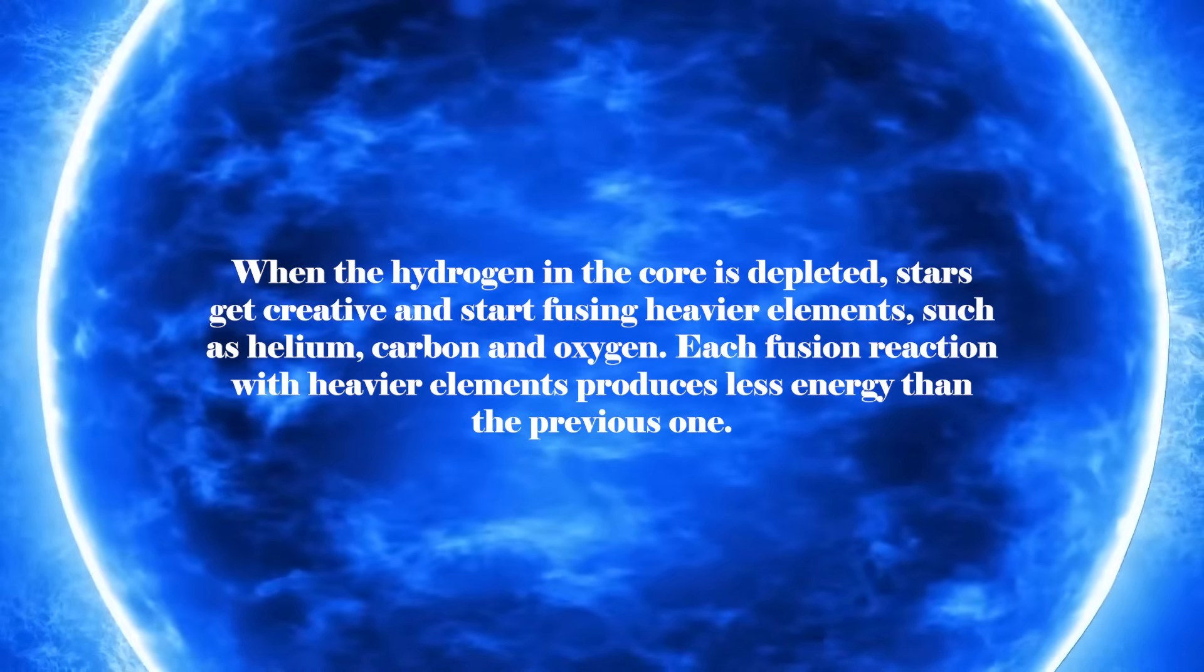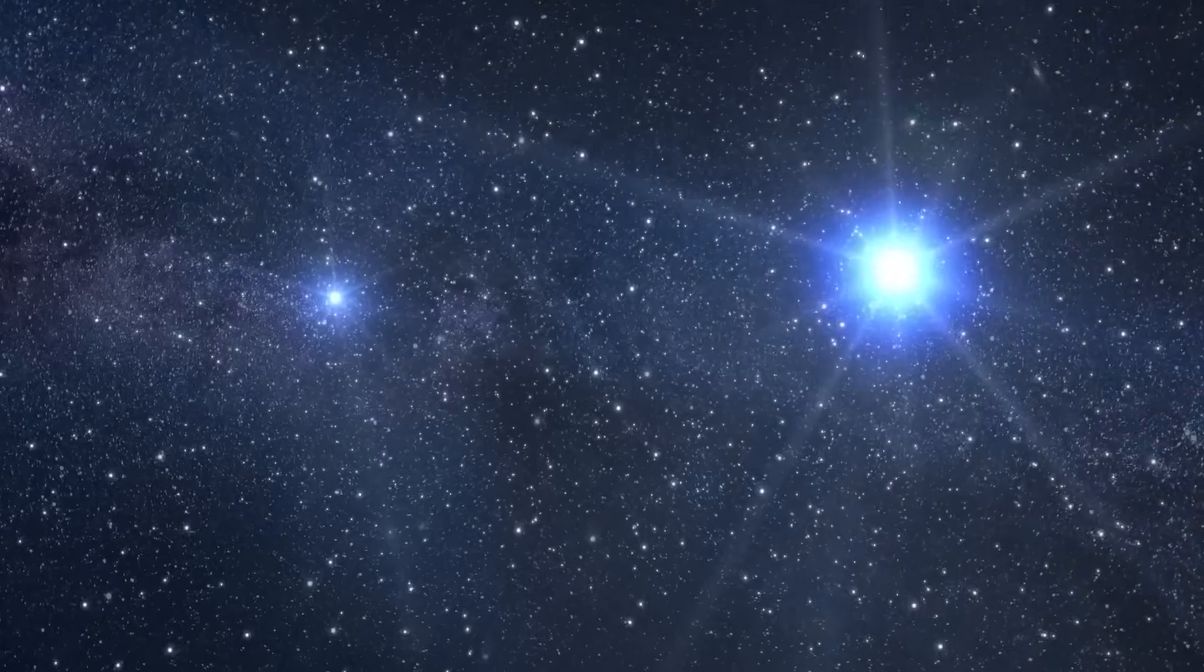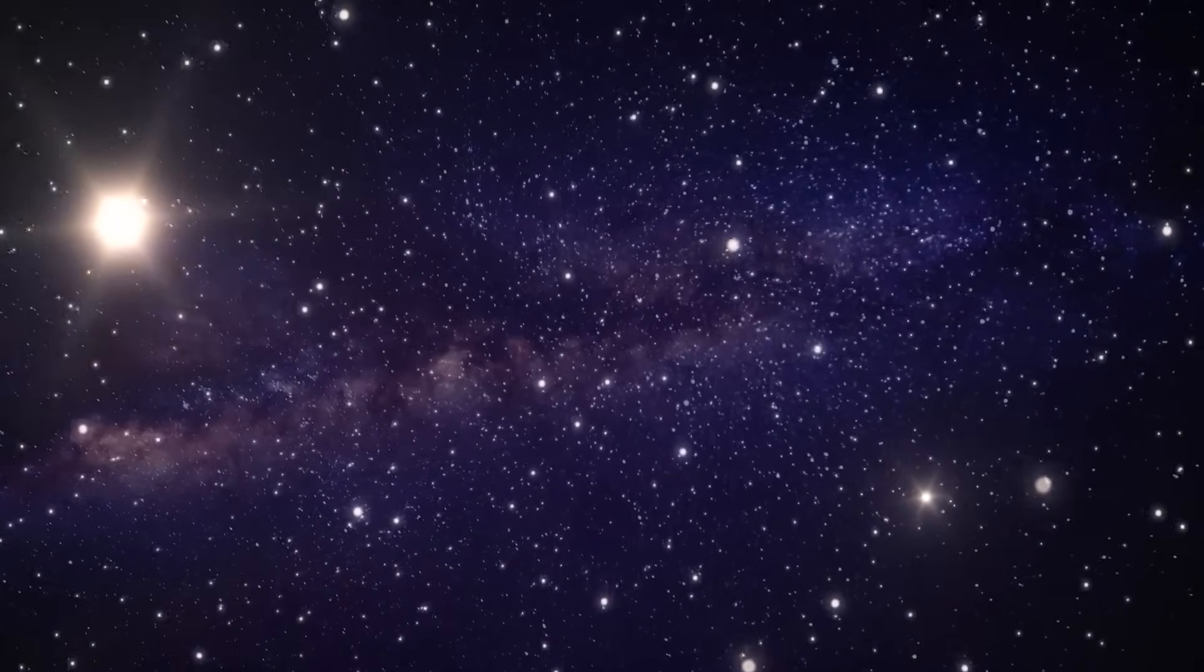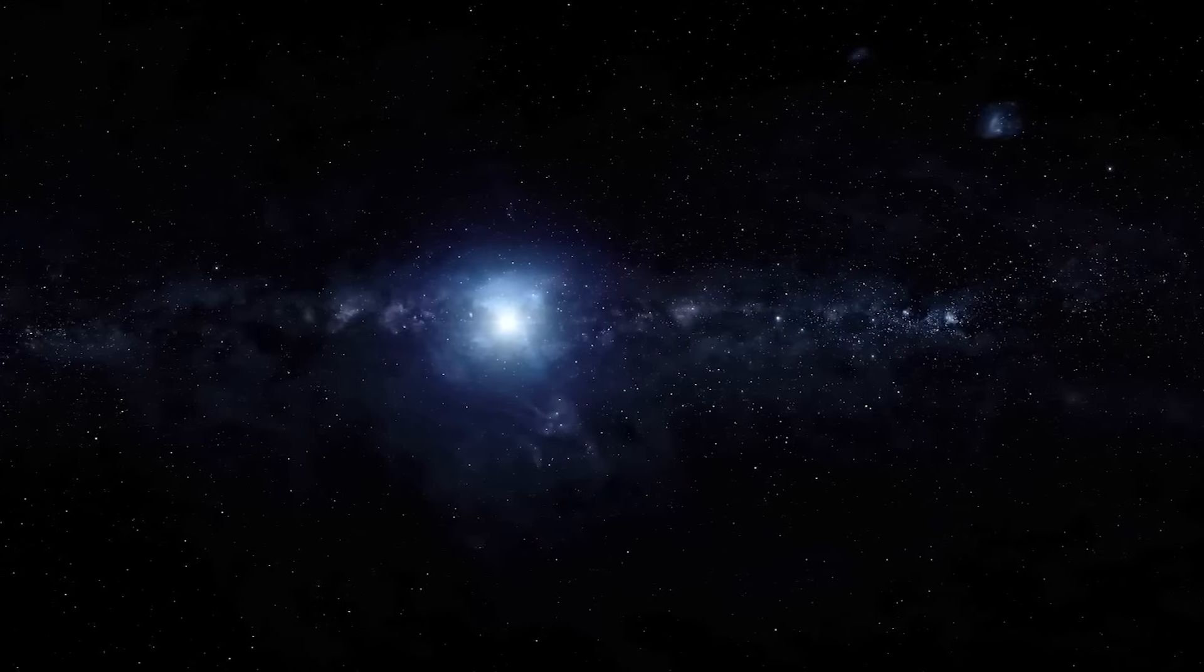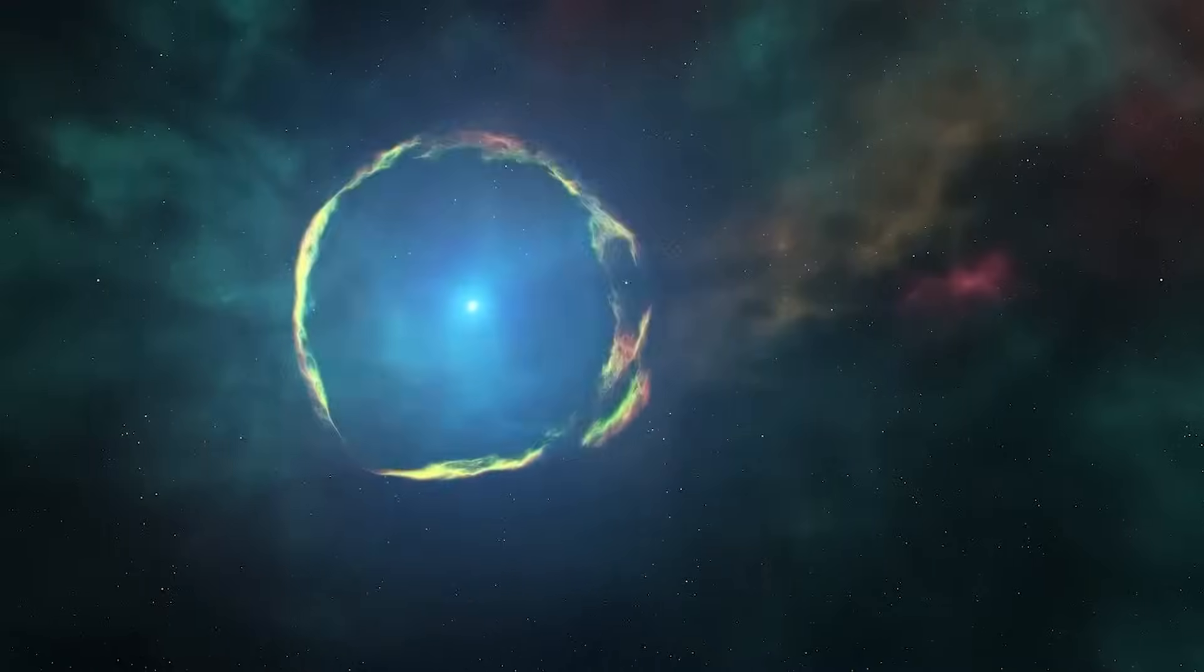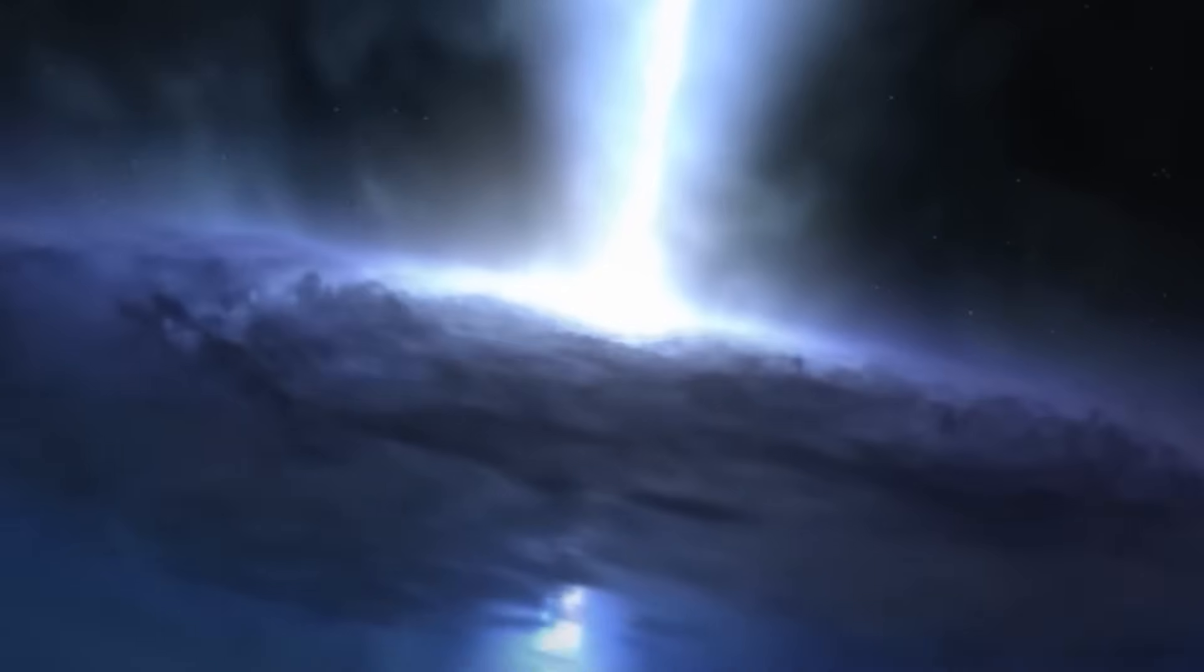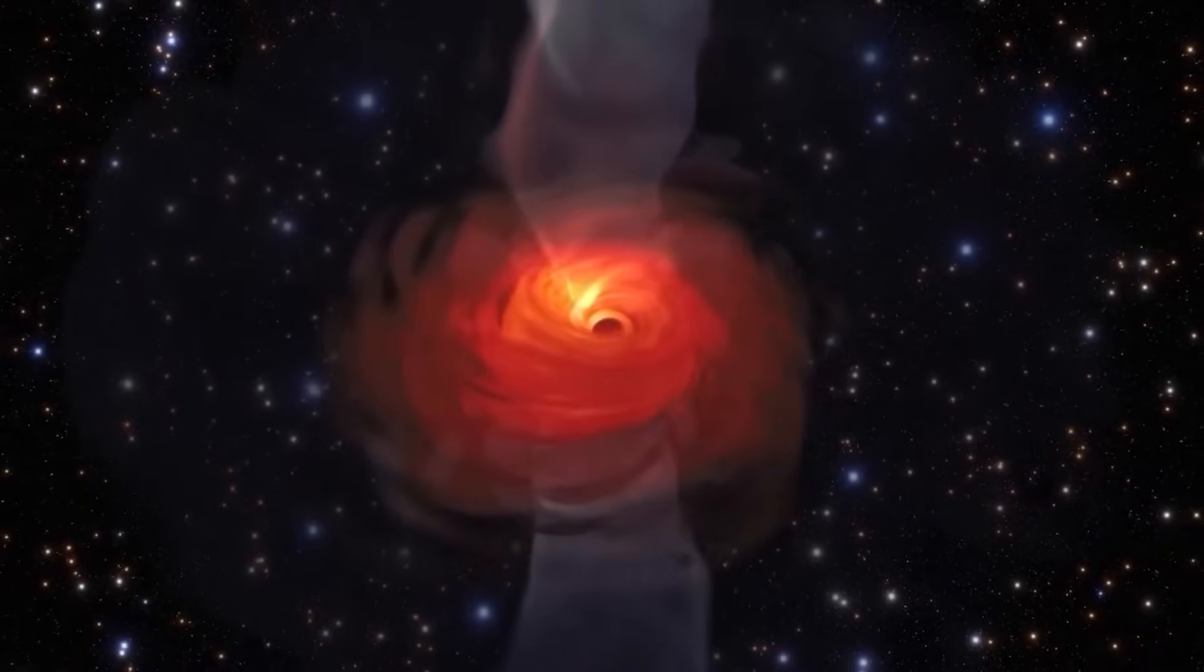Each fusion reaction with heavier elements produces less energy than the previous one. To compensate for this decrease in energy, the star has to work harder and burn faster, increasing heat to maintain its delicate balance. However, there is a critical point when the star can no longer fuse any more elements. At this extraordinary moment, the star's core collapses under its own weight in a magnificent implosion. In that moment, a black hole is born, and the collapsed core forms the heart of the black hole, known as the singularity.